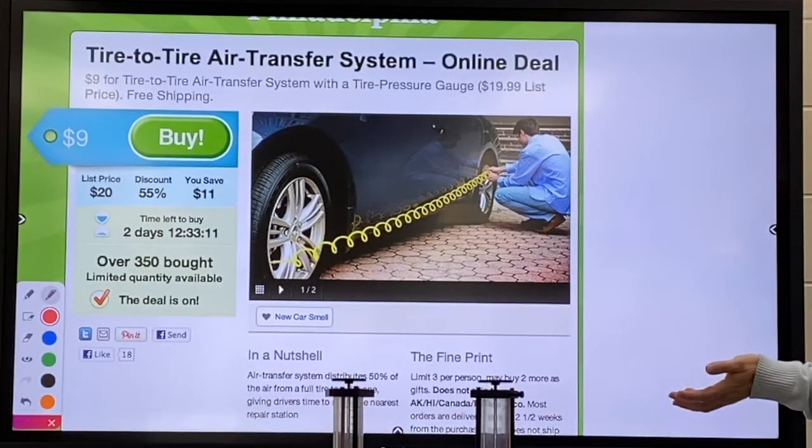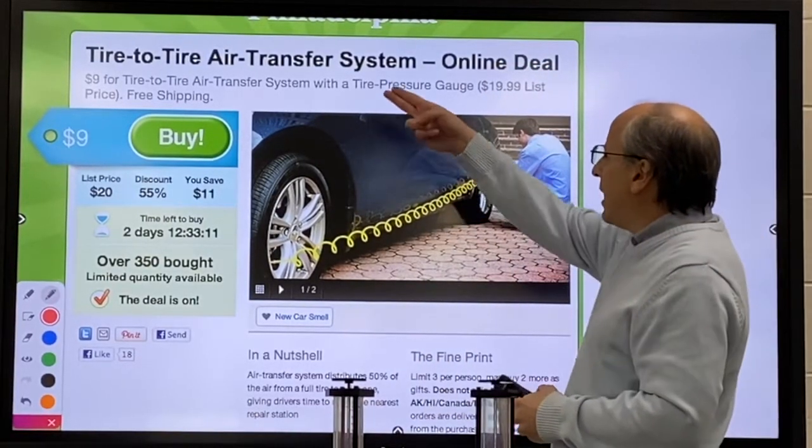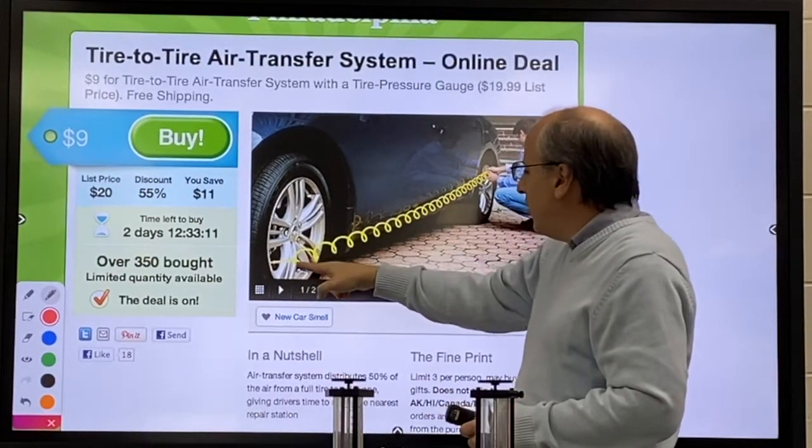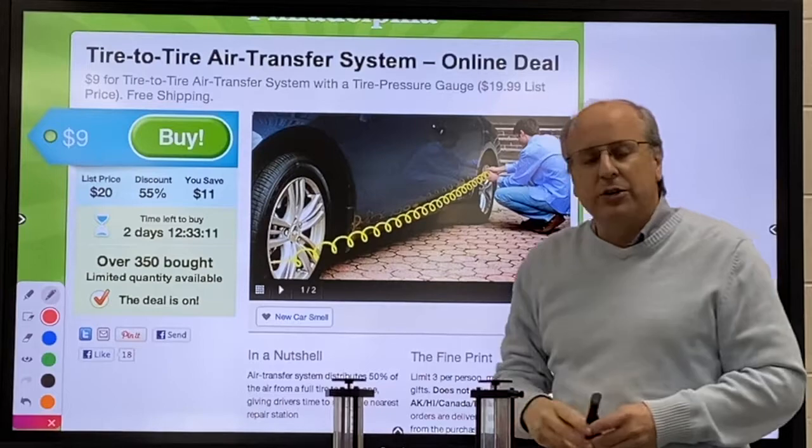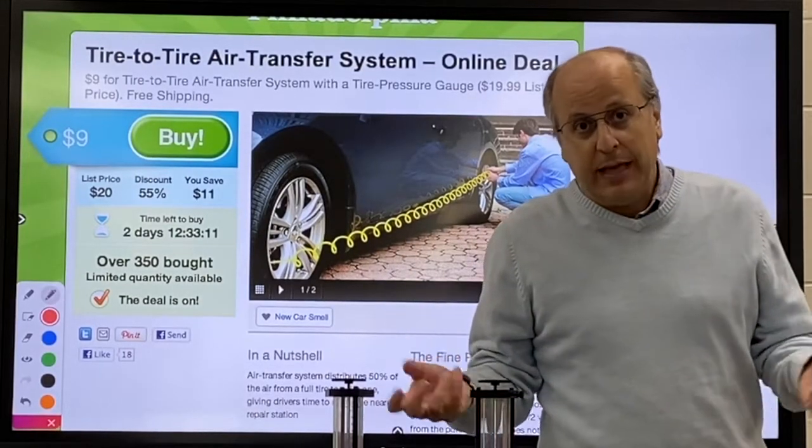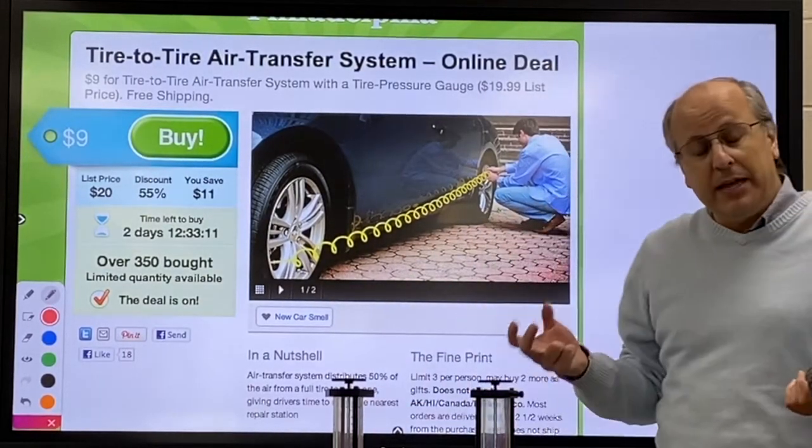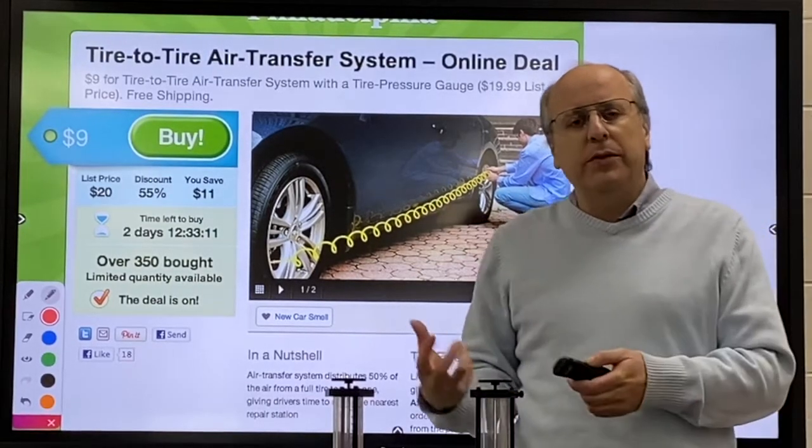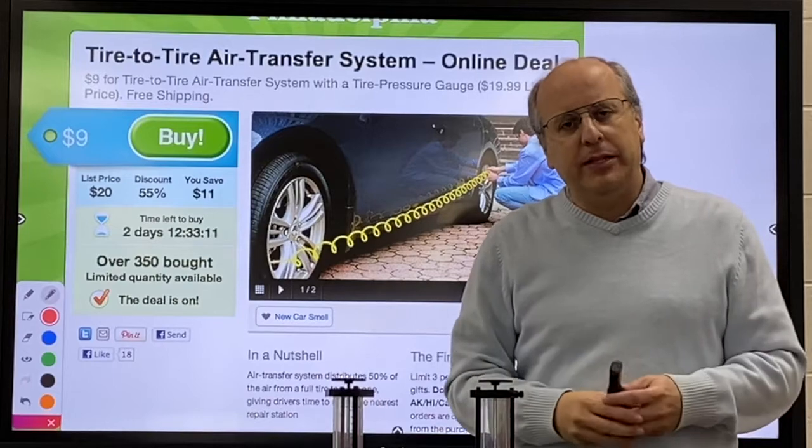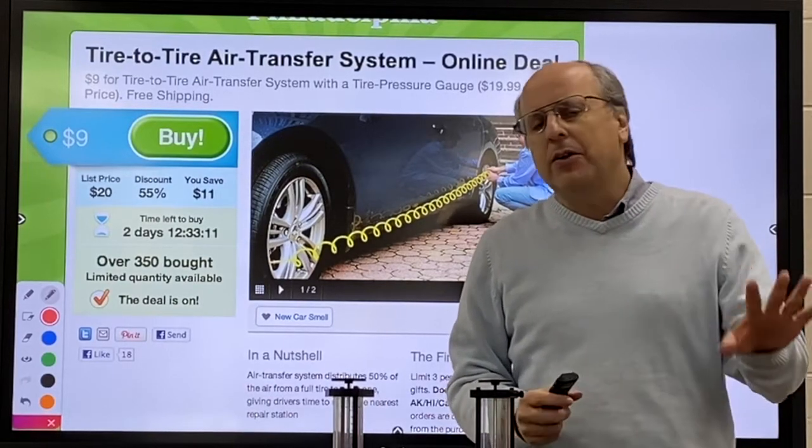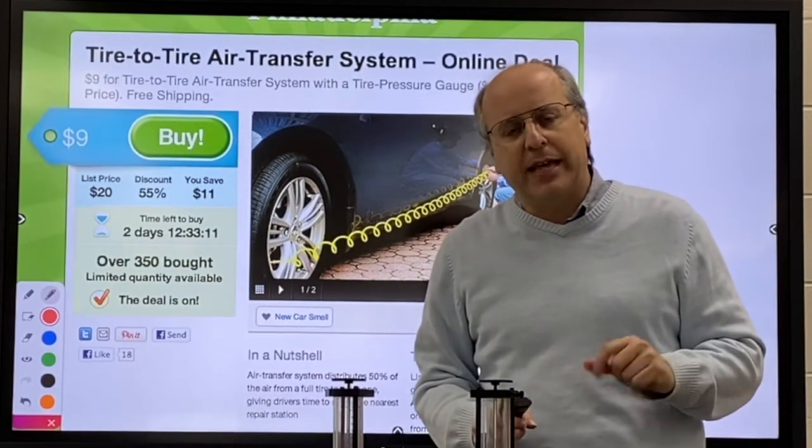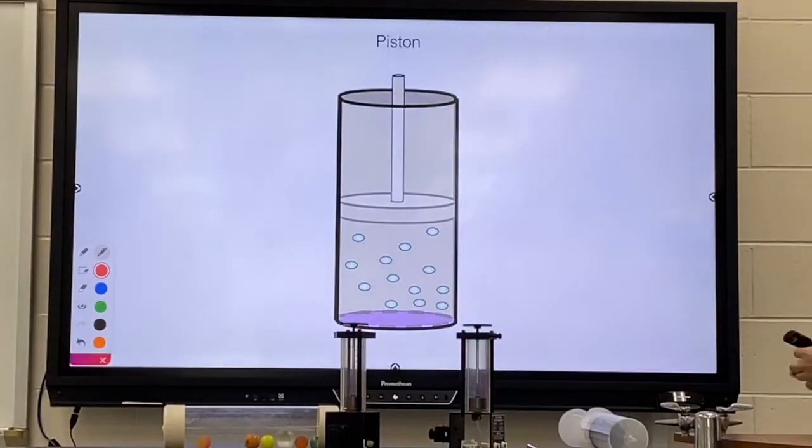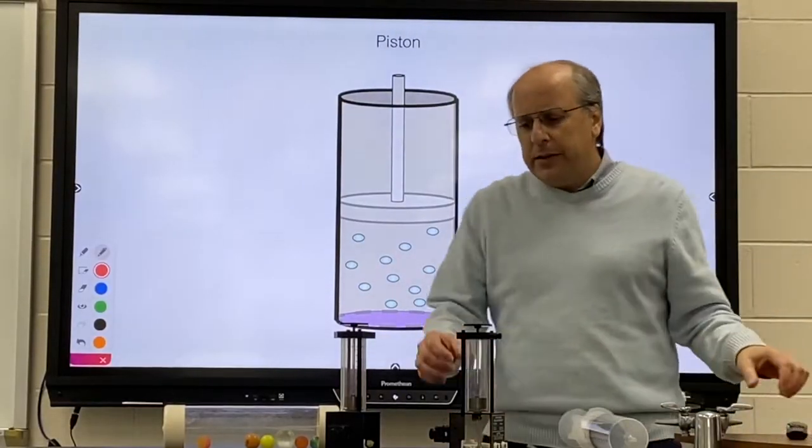I want to show you something that's kind of silly. It's a tire-to-tire air transfer system. You'll hook a hose from one tire of your car to another and air will flow. What I'd like you to try and think about is what direction is it going to flow and when will the air stop flowing between the two tires. I'm not going to answer that, so think about that today.